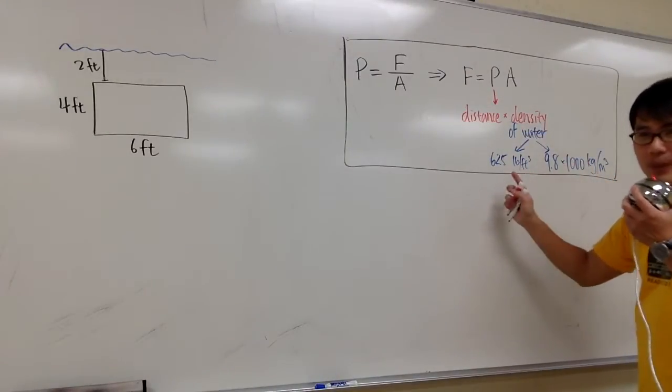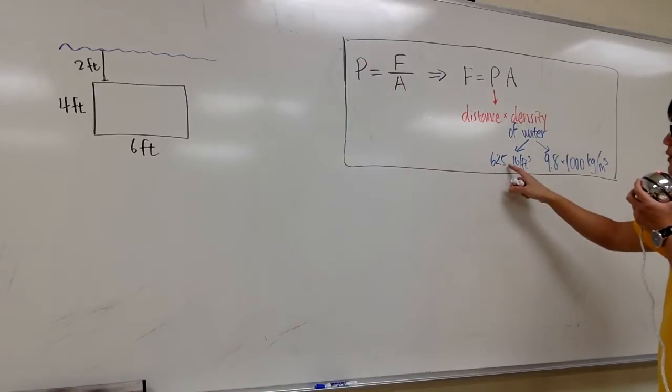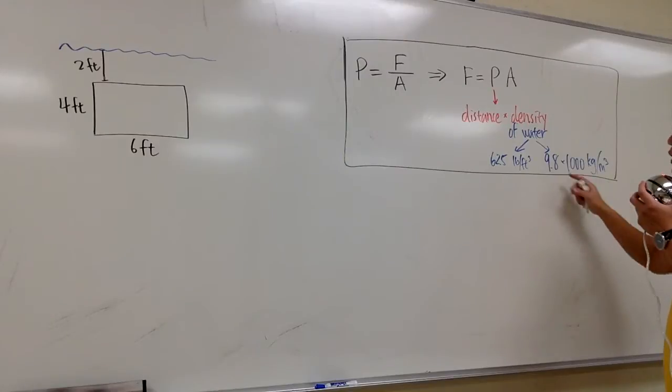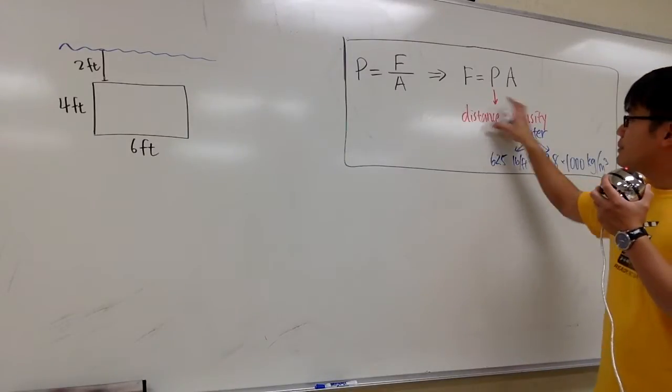And it also depends on the unit, just like the work. If we are using the feet, we multiply by 62.5. If the unit that we are using is a meter, we multiply by 9.8 and 1,000. But then, that's the idea.